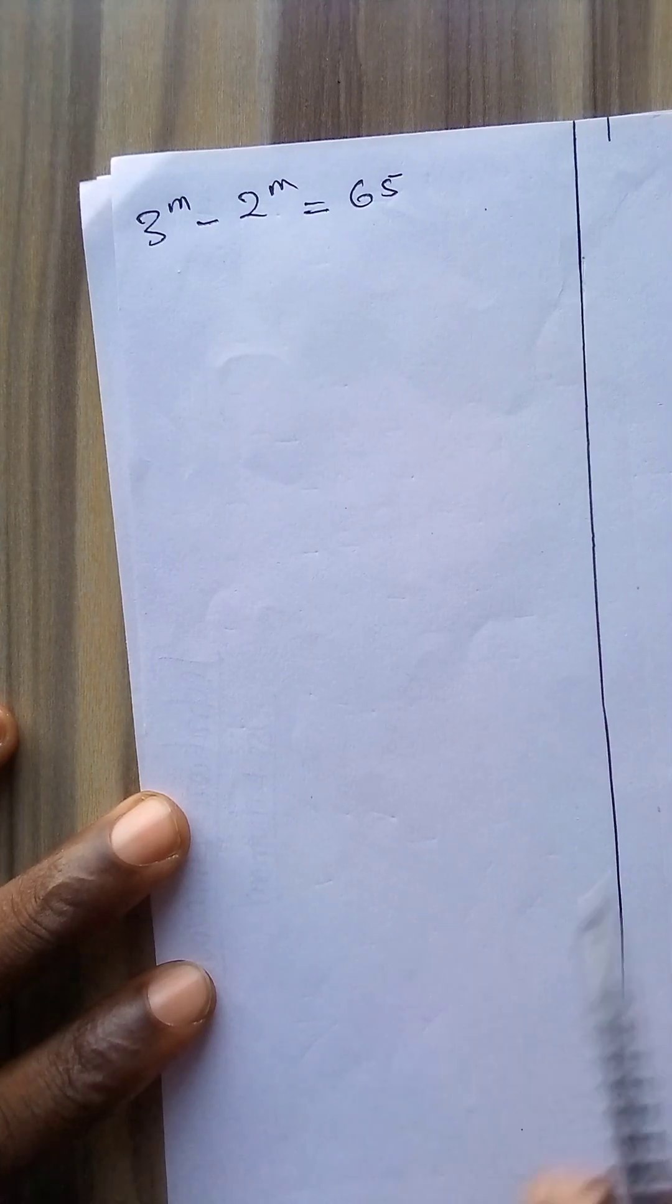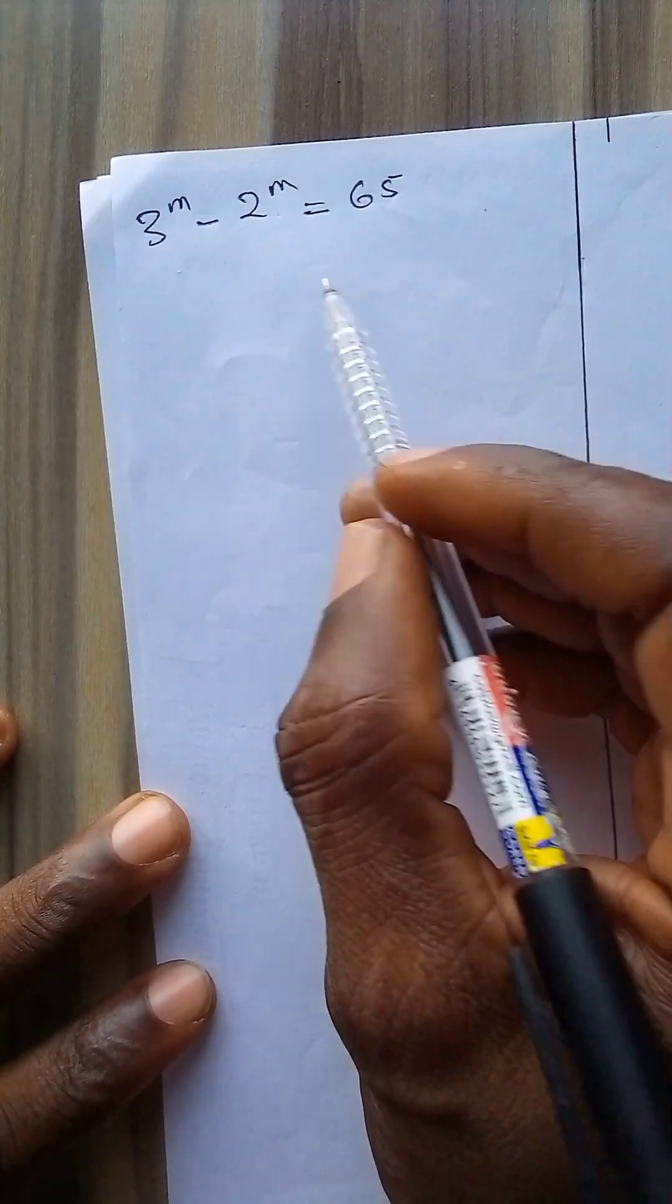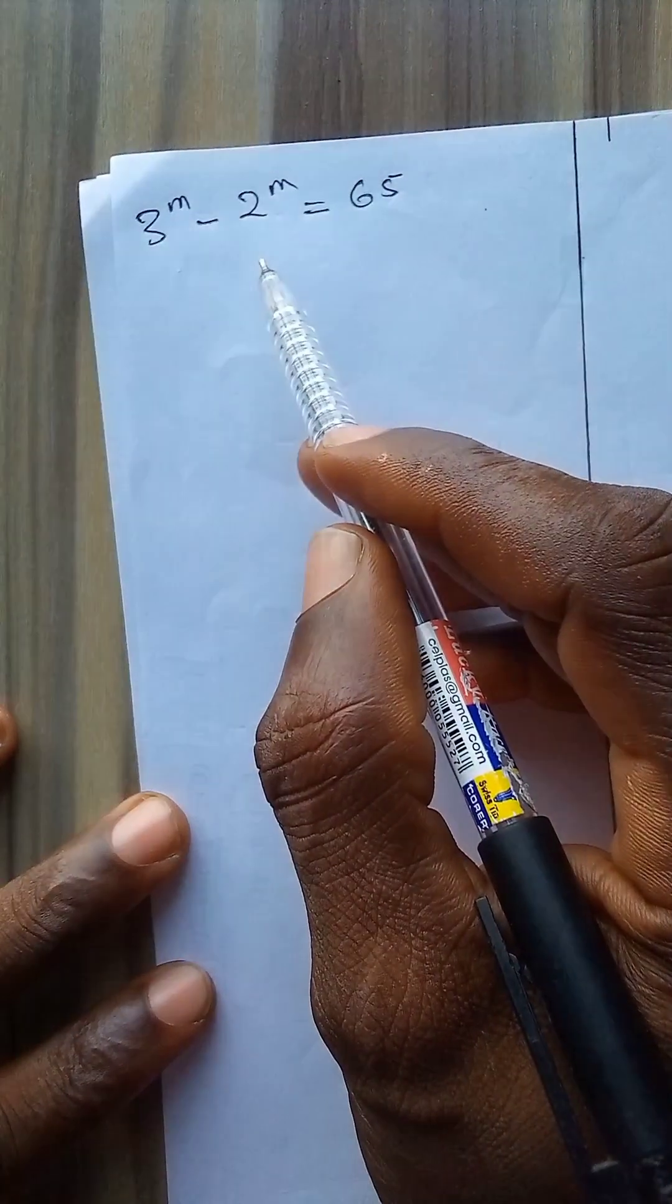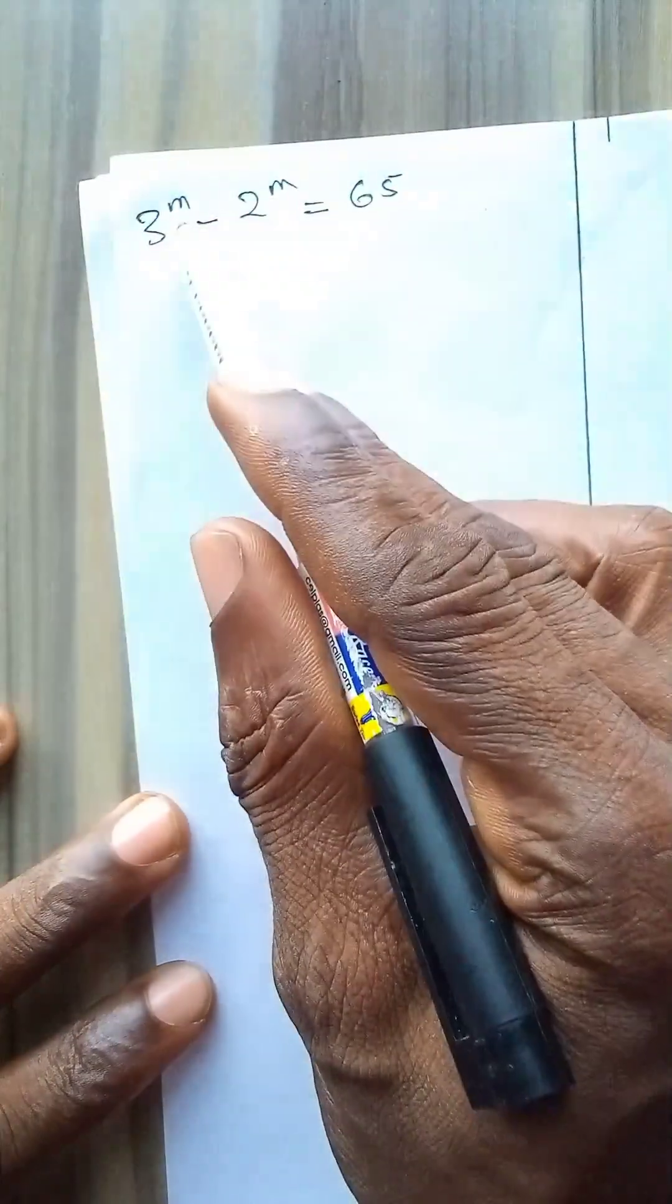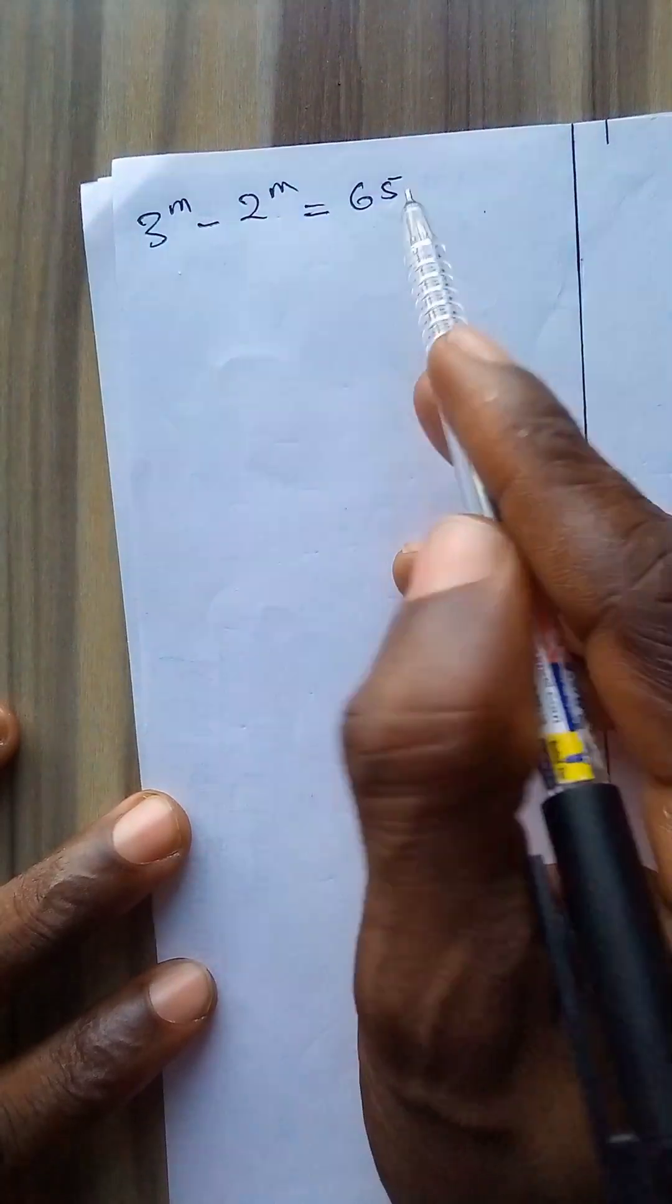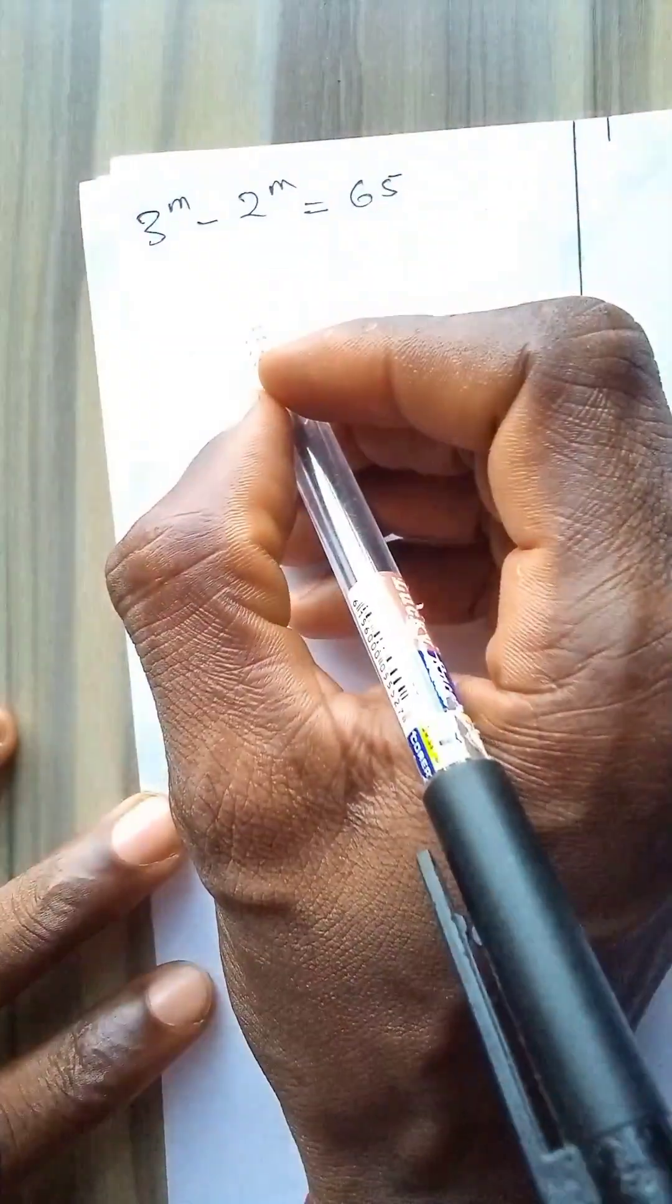Welcome to my channel. In this video we have a very interesting math problem to solve: 3 to power m minus 2 to power m is equal to 65. We are required to find the value of m.